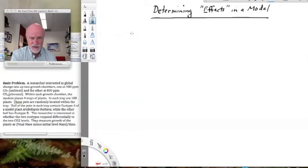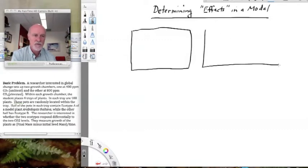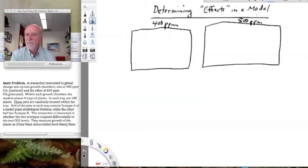In this study we have a researcher interested in global climate change, and they set up two growth chambers. Let's go ahead and draw the physical layout of this. They have two growth chambers, one over here, one over here, and one is set at 400 parts per million, and one is set at 800 parts per million. Elevated CO2, ambient CO2.